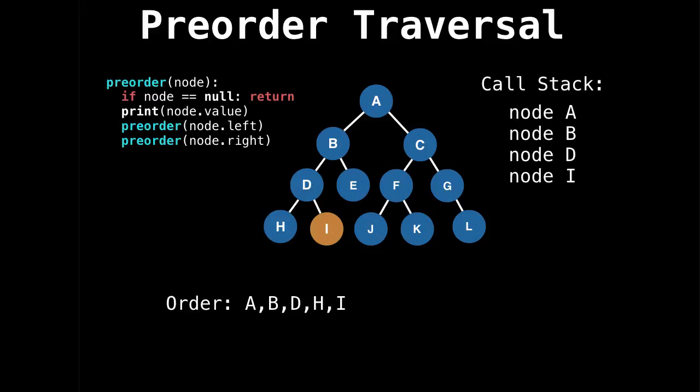Now we're at the bottom, so we recurse back up, so we push I off the call stack. We've already processed D, and we go back to B, we've also already processed B, but now we have to do B's right subtree. So we go and explore E. Now we've explored E, so push frame off the stack, explored B, push that off the stack.